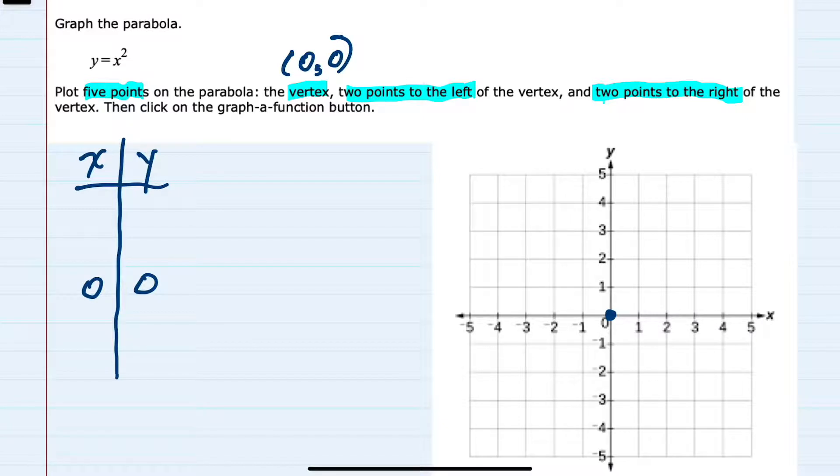I'll use x values of 1 and 2 which will put us on the right, and minus 1 and minus 2 will put us on the left. And then I can substitute those values in to find the corresponding y's.